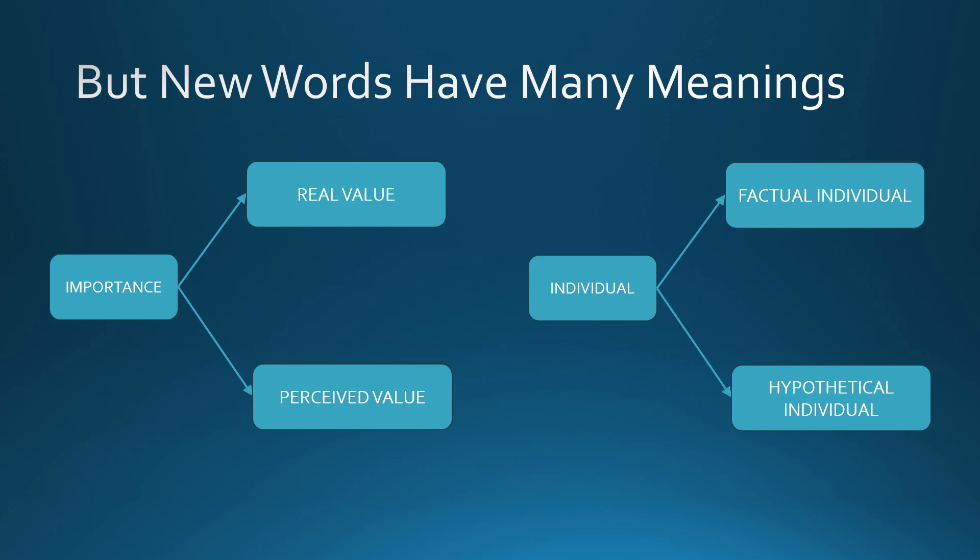However, substitution does not solve the problem because even words like 'importance' and 'individual' have multiple meanings. For example, the word 'importance' can be given many meanings such as the real value of a person and the perceived value of a person. Similarly, the word 'individual' can be given multiple meanings such as a factual individual or a hypothetical individual.